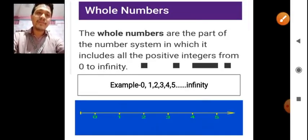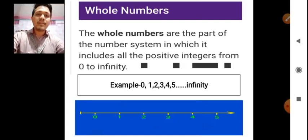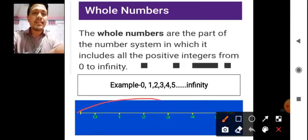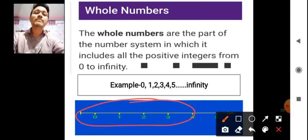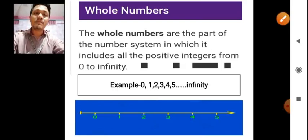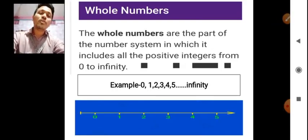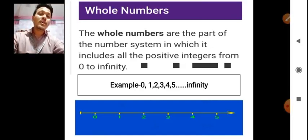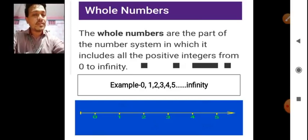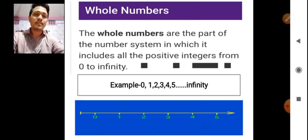Next number we have is whole number. What do you mean by whole number? If I take 0 in a number line, you can see here — if I include 0 also, so 0, 1, 2, 3, 4 — all these numbers will be considered as a whole number. That means whole numbers include all the positive integers from 1 onwards, and also includes 0. So 0 to infinity will be considered as a whole number.